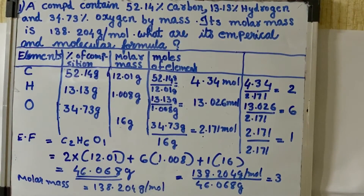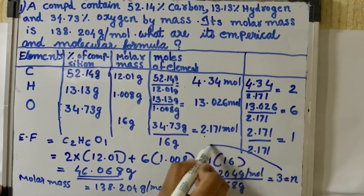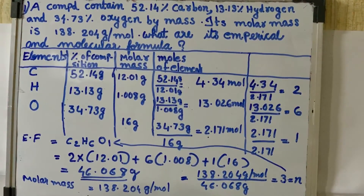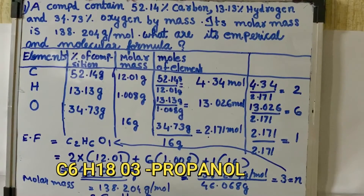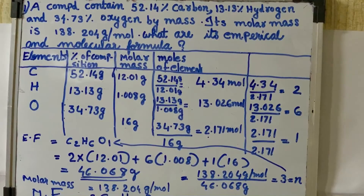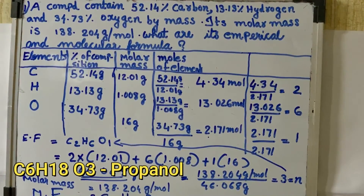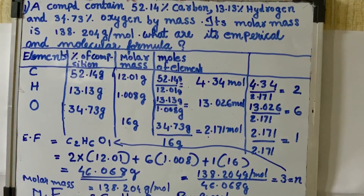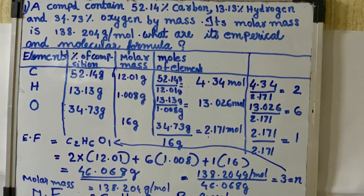The value of n is 3. So the molecular formula is the empirical formula multiplied by 3: C2×3, H6×3, O1×3, giving us C6H18O3. This is our molecular formula. The molecular formula C6H18O3 is the actual formula, while C2H6O is the simplified empirical formula. That is the difference between empirical and molecular formula.